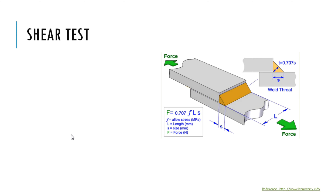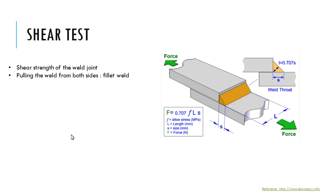Shear test: as you can see from the figure, a lap joint with fillet weld is examined under shear test, which is helpful to determine the shear strength of the weld joint. Pulling the weld from both sides determines the shear strength. The force F applied on opposite sides, and the ultimate force value at failure divided by area gives the shear stress. This test is done on a universal testing machine, where coupons are clamped, force is applied from both directions, and the machine records the force at failure.